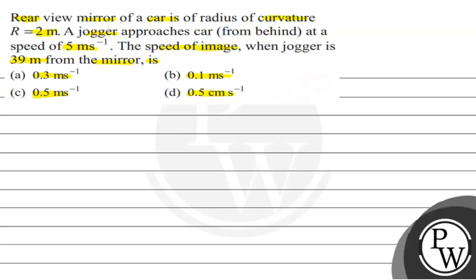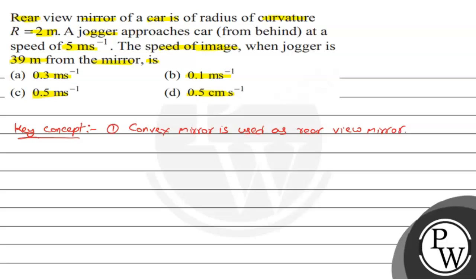We will discuss the key concepts. The first key concept is: which mirror is used as a rear view mirror? A convex mirror is used as a rear view mirror.